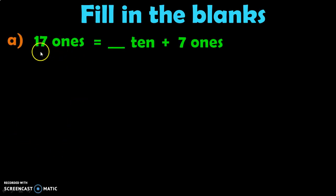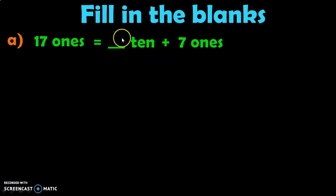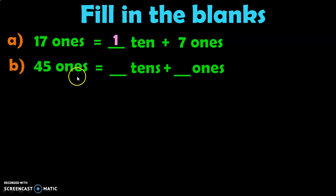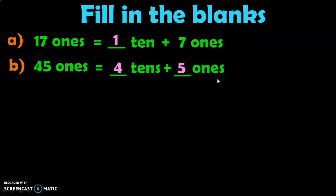Let us do the next interesting activity. We have 17 Ones equal to dash 10 plus 7 Ones. The answer is 1 Ten plus 7 Ones, which makes 17. Next: 45 Ones is equal to dash Tens plus dash Ones. The answer is 4 Tens plus 5 Ones, which makes 45.